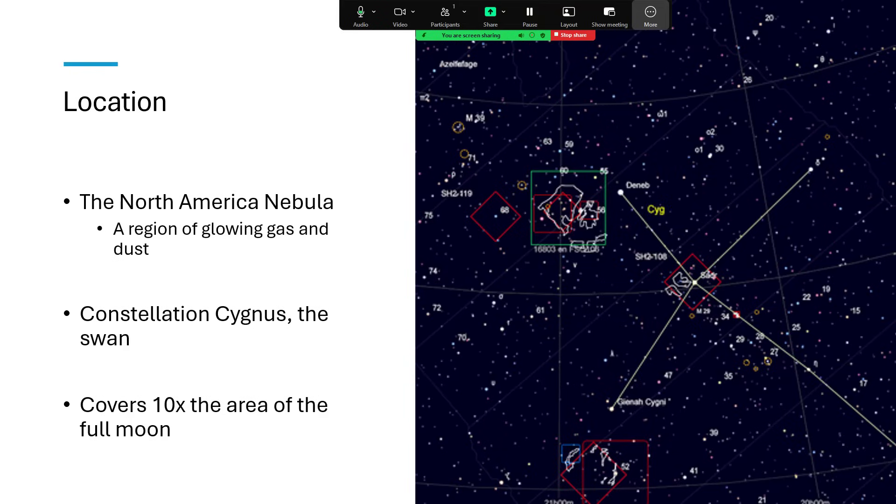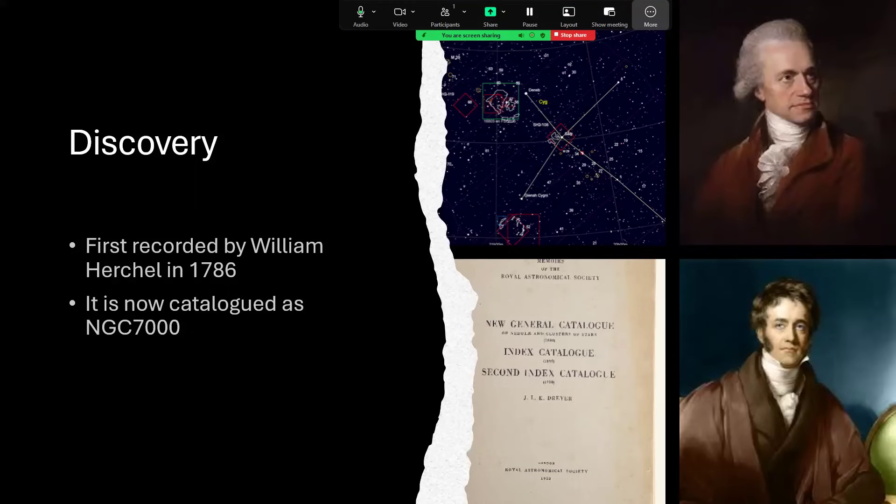Ten times the area of the full moon, so if you try and use a normal telescope you're going to drill right inside it and not actually get the vista of the whole thing. It was first recorded by William Herschel, top right there, and catalogued by his son John in the new general catalogue as NGC 7000, a very easy reference to remember.